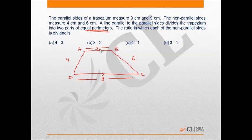9 is 3 times of 3. That means if I need to form the two perimeters equal, my parallel line should be much closer to DC, which is of length 9 cm, instead of AB.